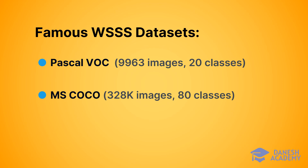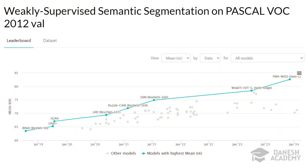For training a WSSS model, a dataset of images with their corresponding labels is sufficient. In research papers, mainly two datasets are used by authors to evaluate their model's accuracy: the Pascal VOC dataset, containing about 10,000 images, and MS COCO, containing 328,000 images. This chart from the Papers With Code website shows the development of WSSS methods on Pascal VOC over the last decade. As seen, each year new methods are suggested by researchers to gain better segmentation accuracy, and there is still room for further advancements.